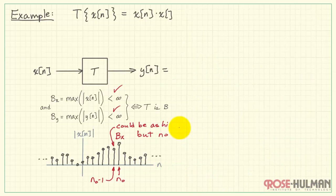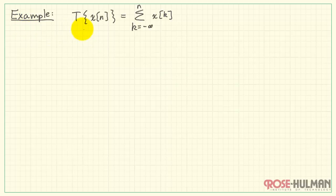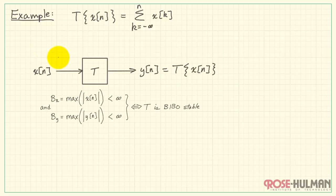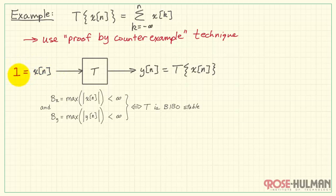Let's give this a try on a second example. In this case, the system operates on the input by summing all the values from minus infinity up to the current time n. Let's put down our proof structure here, and then turn to the specifics. Since we're dealing with an infinite sum, it may be more convenient to use the proof by counterexample technique. Let's give that a try.